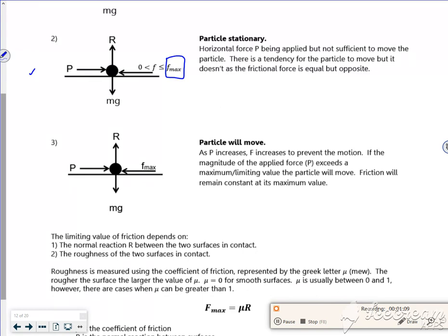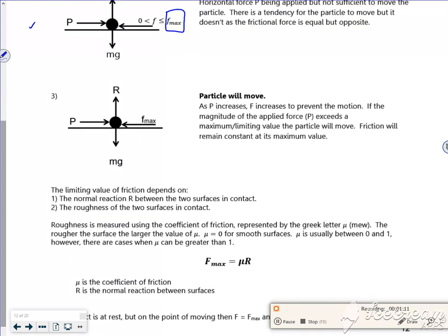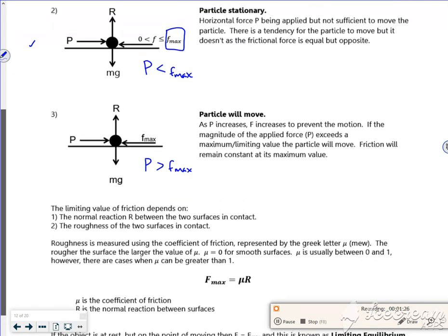So the third one says, ha ha, you're pushing hard enough that now it's moving. So my P value will be greater than my F max. Here my P value is less than my F max. Does that kind of make sense to you?